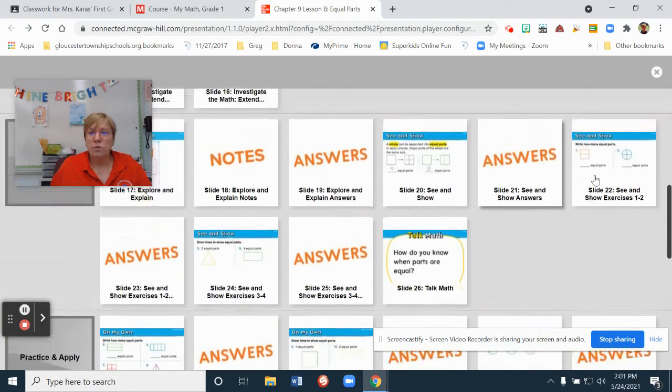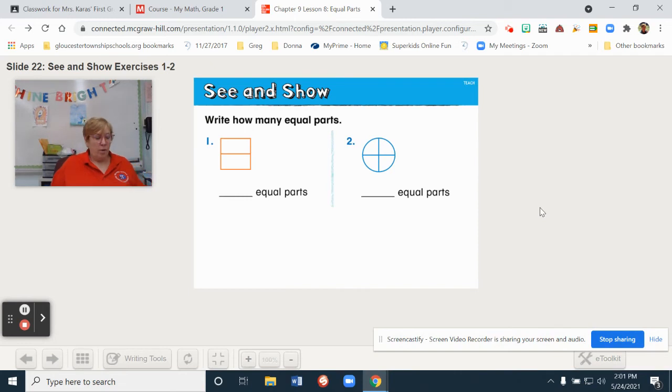Now, let's go to our number one. They want you to look and write how many equal parts there are for each shape. So, pause now and write your answers and then come back and check. So, for number one, there are two equal parts. And number two, there are four equal parts.